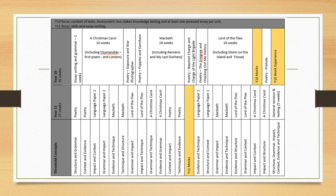Over the course of Year 10, you will study the entire English Literature course. We'll begin with A Christmas Carol, then move on to Macbeth, and finally in the last term we'll look at Lord of the Flies. Throughout the whole of Year 10, you will also be studying the 15 poems that make up your Power and Conflict anthology.